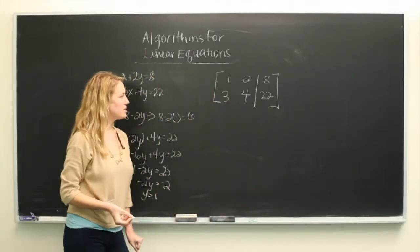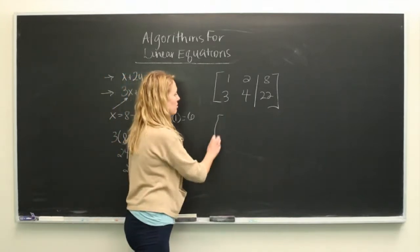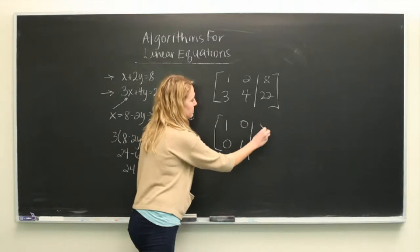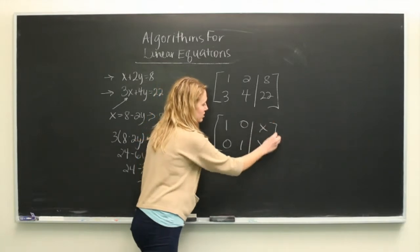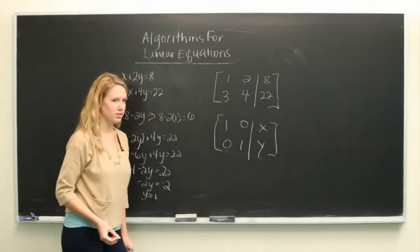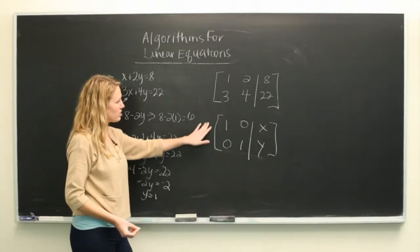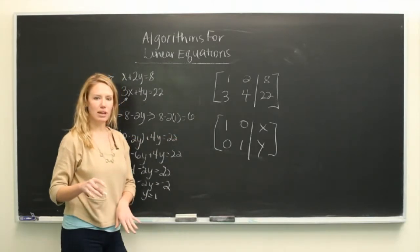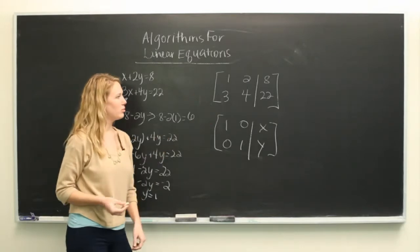Now the goal of this is to get a matrix that has the identity matrix and the answer numbers on the other side of the line. And all you have to do to get this is to use guess and check methods manipulating the rows.